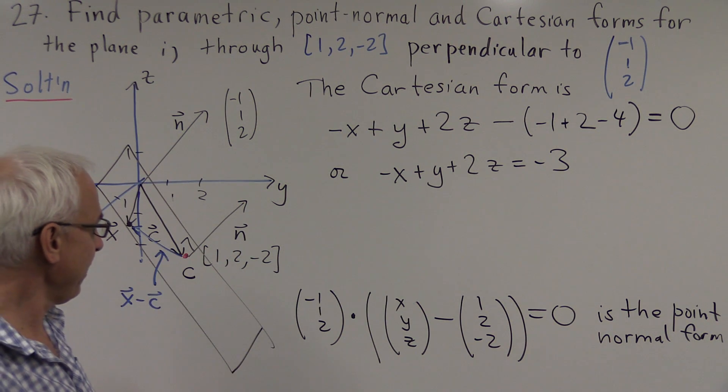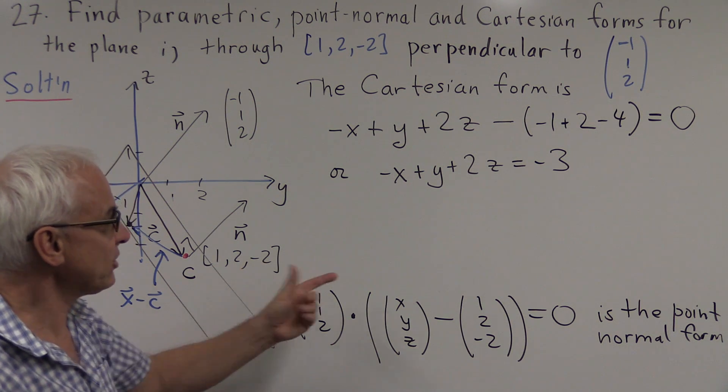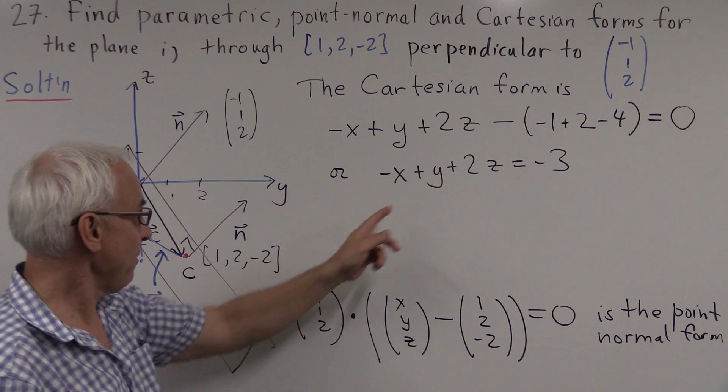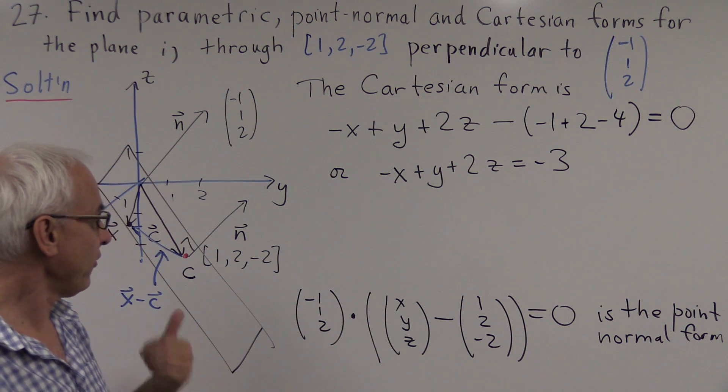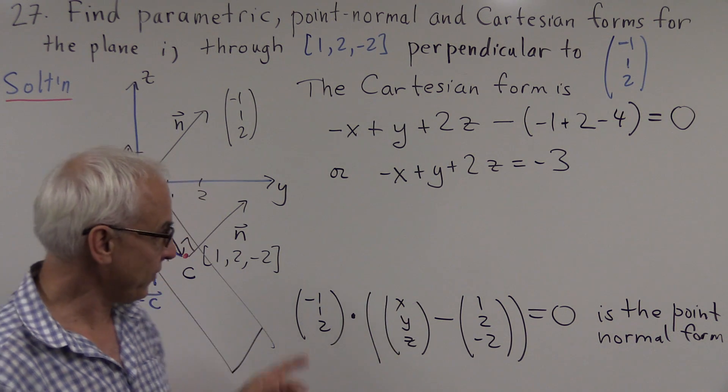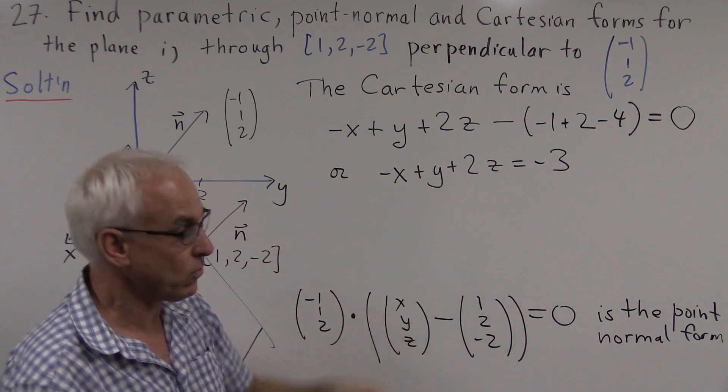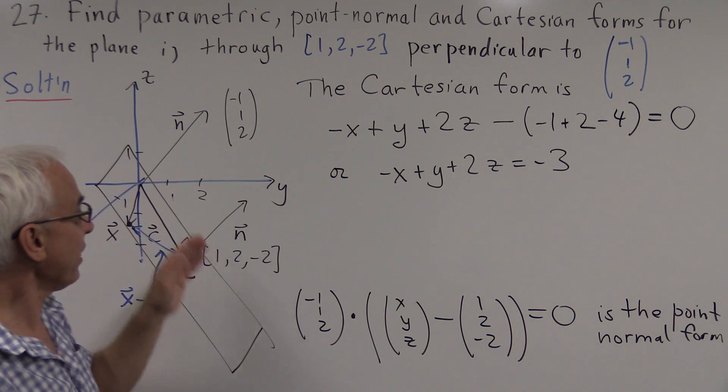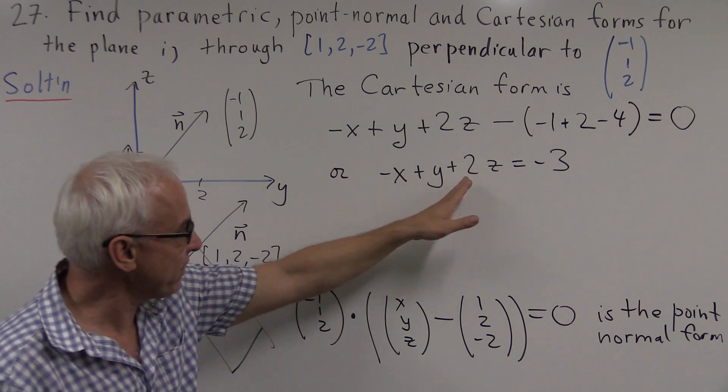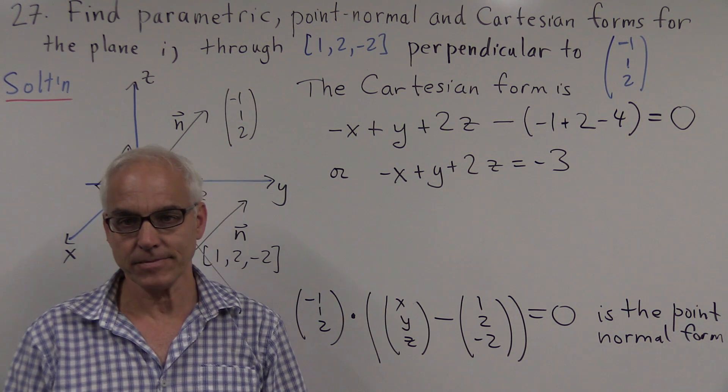How can we check whether that's actually correct? Well, we're told that this plane passes through the point (1,2,-2). So we can check: does the point (1,2,-2) actually satisfy the equation? Well, if you plug it in, you get -1+2-4. So -1+2 is +1, minus 4, that is indeed -3. So that equation is satisfied by that point there. And furthermore, you can see that the coefficients of x, y, and z, which are -1, 1, and 2, are exactly the coefficients of the normal vector. So there's an intimate connection between the coefficients of x, y, and z in the plane and the coordinates of the normal vector.